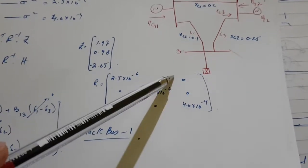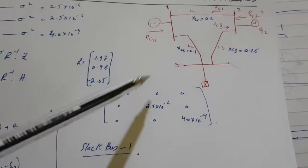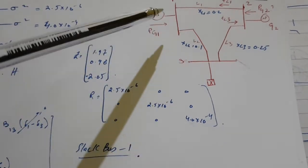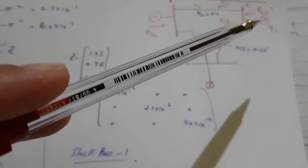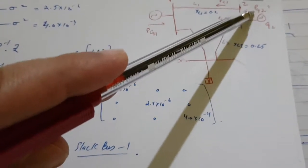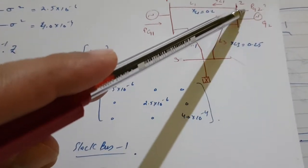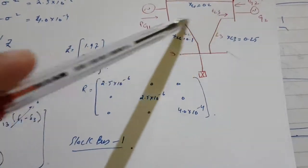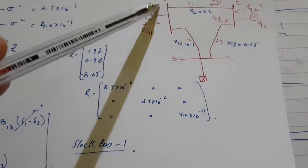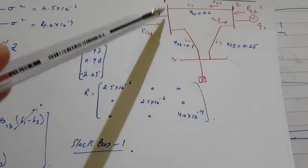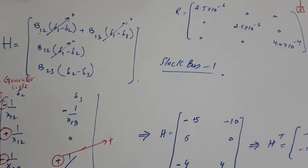You have to select a slack bus. Bus 3 is the load bus so it cannot be the slack bus. Bus 1 or bus 2 can be the slack bus, but in bus 2 we have to find PG2 in the second part of this question. If I take bus 2 as slack, all variables become zero and I cannot find PG1, so it is better to take bus 1 as the slack bus.